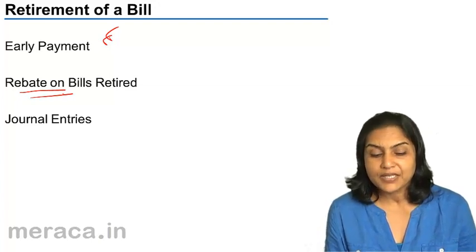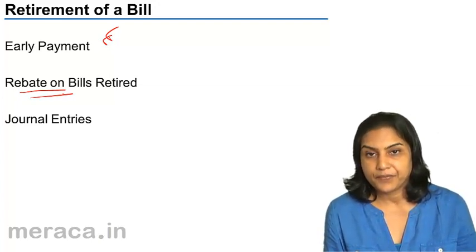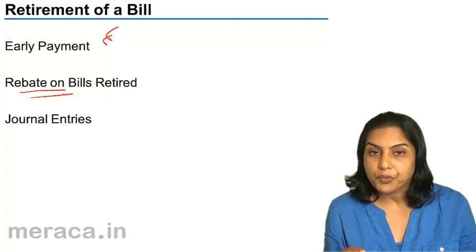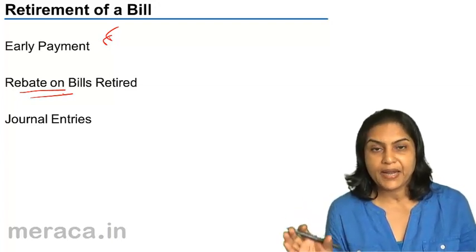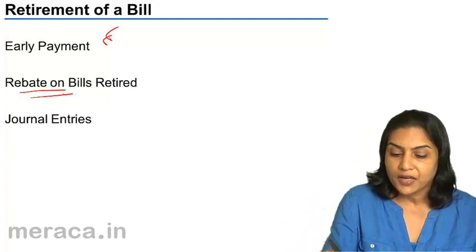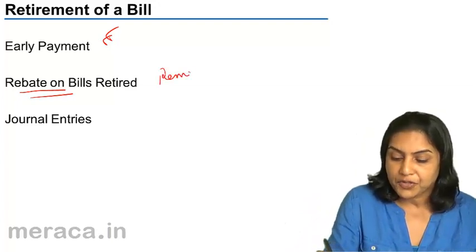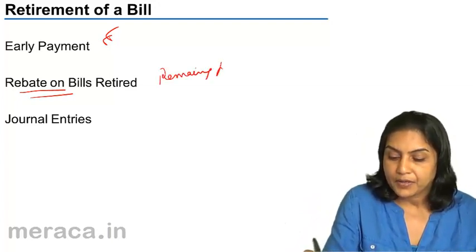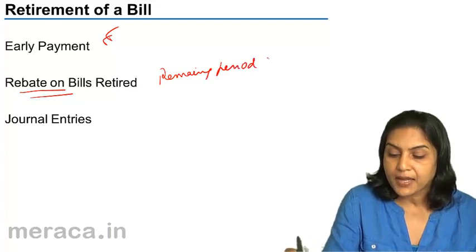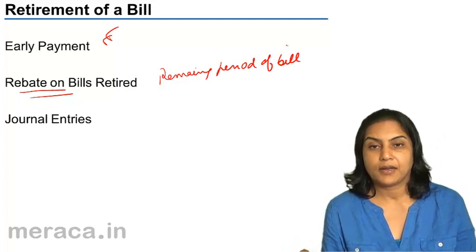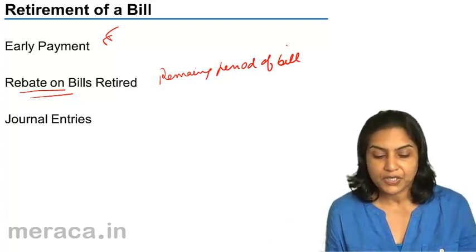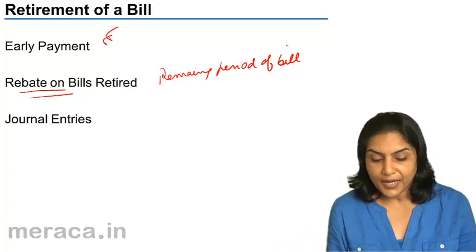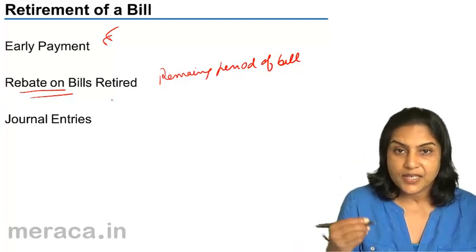The rebate on the bills retired is computed for the remaining period of the bill, because he is making the payment that much early, so he gets a benefit.